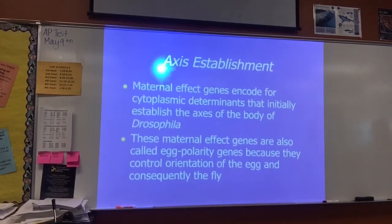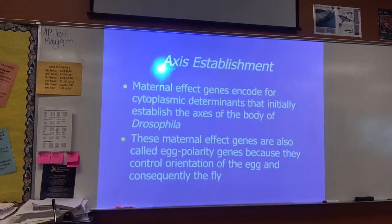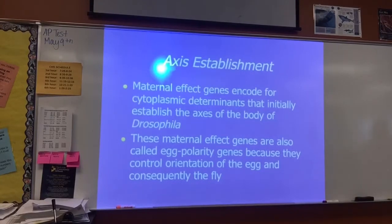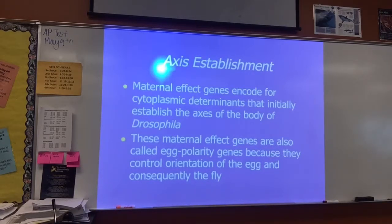What they found is that there are things called maternal effect genes that code for cytoplasmic determinants. These cytoplasmic determinants are the first things that initially establish the axis of the body in Drosophila. These genes are also called egg polarity genes because they control the orientation of the egg and consequently the fly. A real-world example of early developmental disruption in humans would be the Zika virus and microcephaly — we're going to talk about that and I have a video to show.